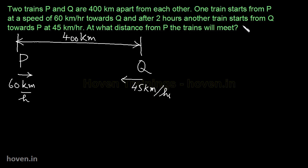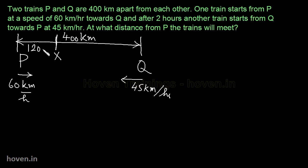यहाँ एक twist है कि after two hours another train starts from Q towards P at 45 km/h। तो यह Q वाली train late चलती है — इतनी देर में P ने कुछ distance cover कर लिया। उस point को x मान लें। यह distance P से x कितना होगा? 60 km per hour को two hours से multiply करें: distance = speed × time = 60 × 2 = 120 km।